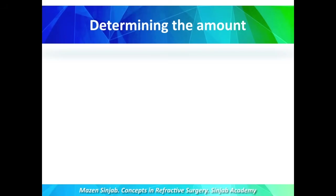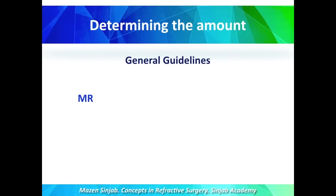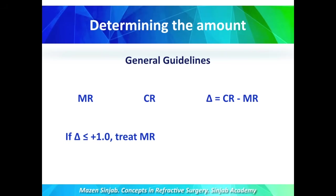In hyperopic correction, we are facing a problem: determining the amount of hyperopia that should be treated. We have to measure the manifest refraction and the cycloplegic refraction, and we have to consider the age of the patient. After measuring both, we calculate the delta, which is the difference between the cycloplegic refraction and the manifest refraction. If delta is less than or equal to 1, then treat the manifest refraction.